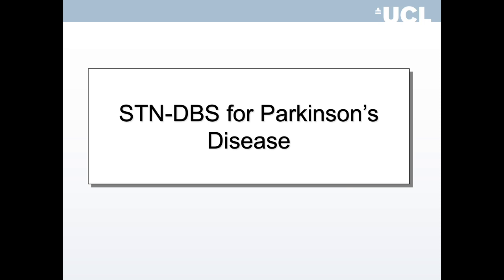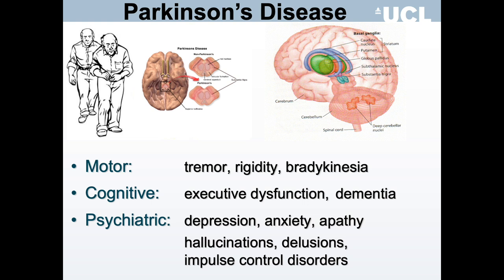Parkinson's disease is a movement disorder due to loss of dopamine-producing cells in the substantia nigra pars compacta of the basal ganglia. The motor symptoms are tremor, rigidity, and bradykinesia. Cognitive deficits include executive dysfunction — problems with planning and problem solving — and in the later stages some cases may become demented. Psychiatric symptoms include depression, anxiety, apathy, hallucinations, delusions, and medication-induced impulse control disorders.